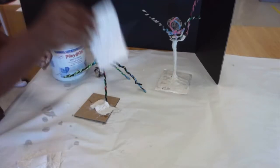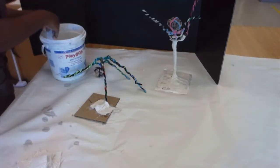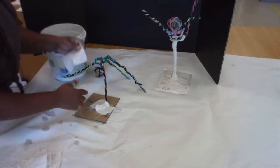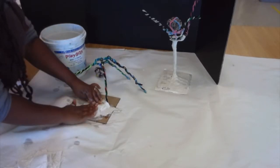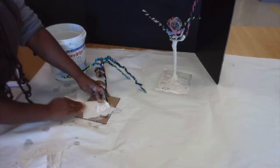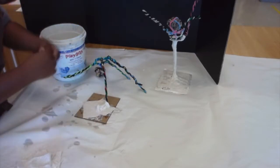And then I'm going to take an additional plaster strip, I'm going to submerge it, and I need to make sure that it overlaps part of the plaster that's already there. And I'm going to do that for my whole base.